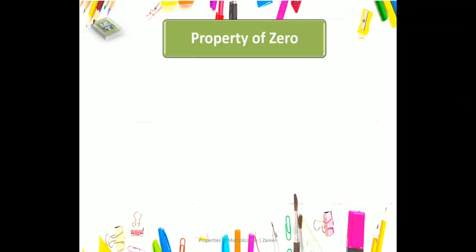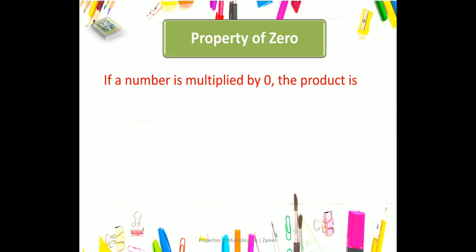Now, property of 0: if a number is multiplied by 0, what will be the product? The product will be 0. So if we multiply any number by 0, our product will be 0.